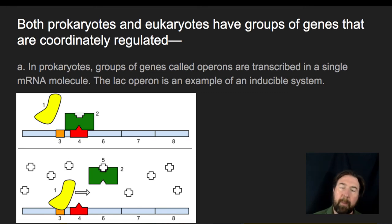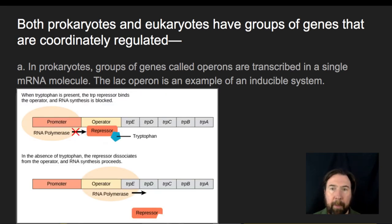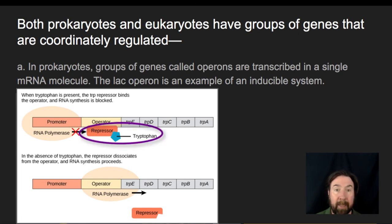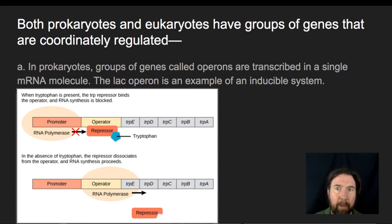In contrast, a repressible system defaults to making the genes all the time, and only blocks protein production when a certain condition is present. The trp operon is the classic example — it governs the manufacture of the amino acid tryptophan. If tryptophan is present in the environment, it binds to a repressor and blocks synthesis of tryptophan, since producing it would be a waste of energy. If there's no tryptophan present, and since tryptophan is an essential amino acid necessary for E. coli's survivability, the organism will make it. This is a good example of turning genes on or off depending on environmental conditions, allowing the organism to survive under the best energetic conditions.